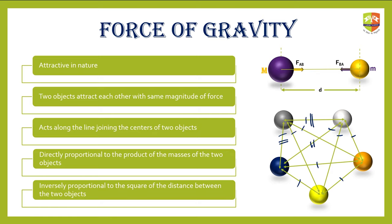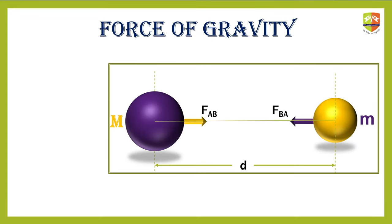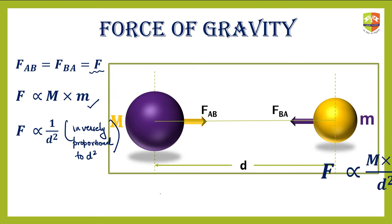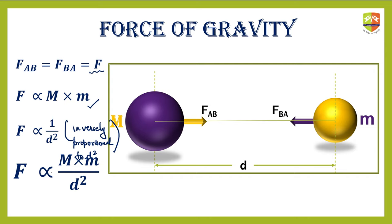So if there are lots of particles or bodies, each pair will attract each other. In mathematical terms: F_ab equals F_ba, and let's call this F. F is directly proportional to M times m, the product of the two masses. F is also inversely proportional to d², meaning directly proportional to 1 upon d². Combining both, F is directly proportional to M times m divided by d².